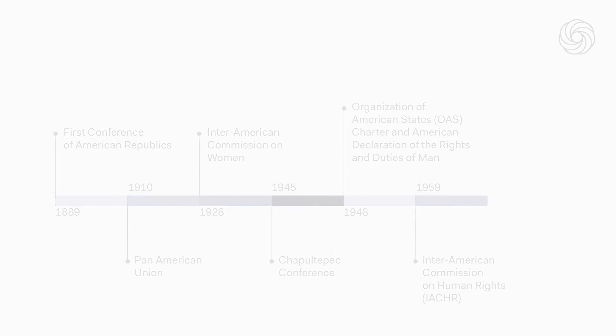Ten years later, in 1969, they adopted the American Convention on Human Rights, which is the foundational instrument — now a treaty, not a declaration — that creates a system very much inspired by the European system: a system with a commission, the pre-existent Inter-American Commission, and an Inter-American Court of Human Rights. But it would take almost ten years for this convention to enter into force. At the time, there were a number of authoritarian governments and dictatorships in the continent, and it was very difficult to gather the number of ratifications that were necessary for the instrument to enter into force.